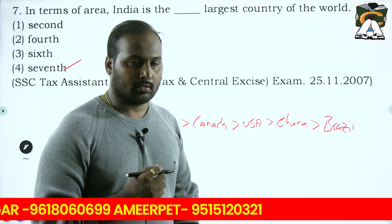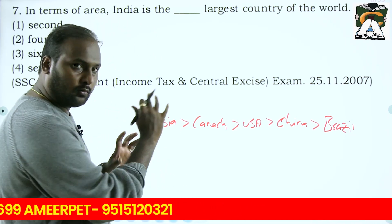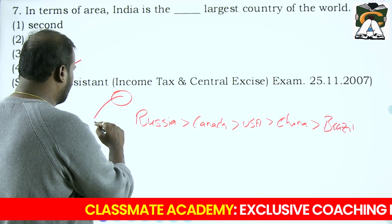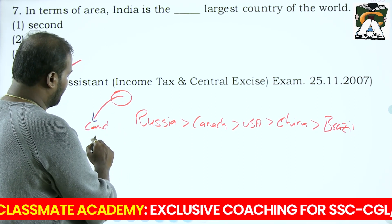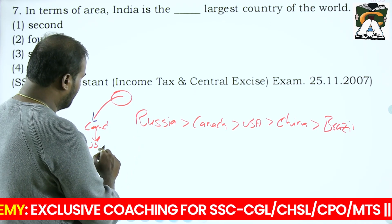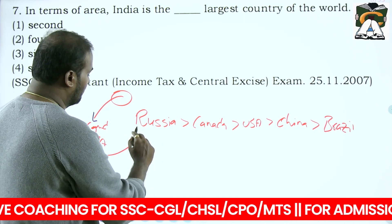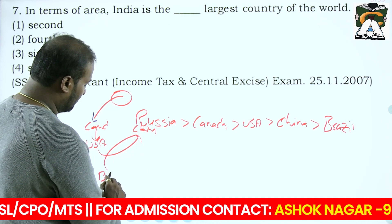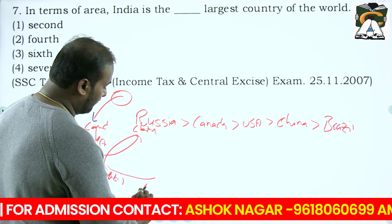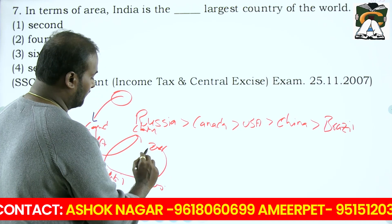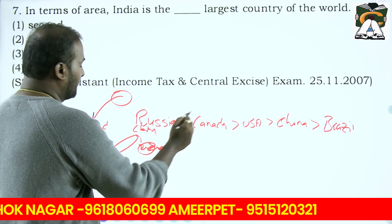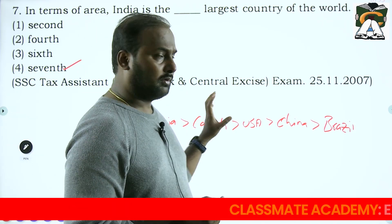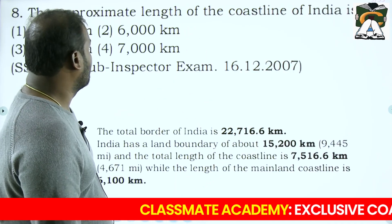If you try to move in the anticlockwise cyclic direction on the map: from Russia you come to Canada, from Canada to USA, from USA to China, from China to Brazil, from Brazil to Australia, then India. It is like a spiral in anticlockwise direction, so you can easily remember the top seven largest countries.